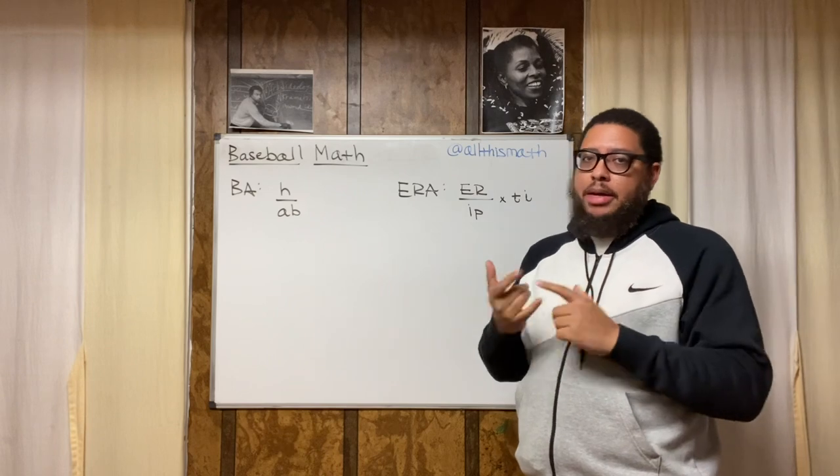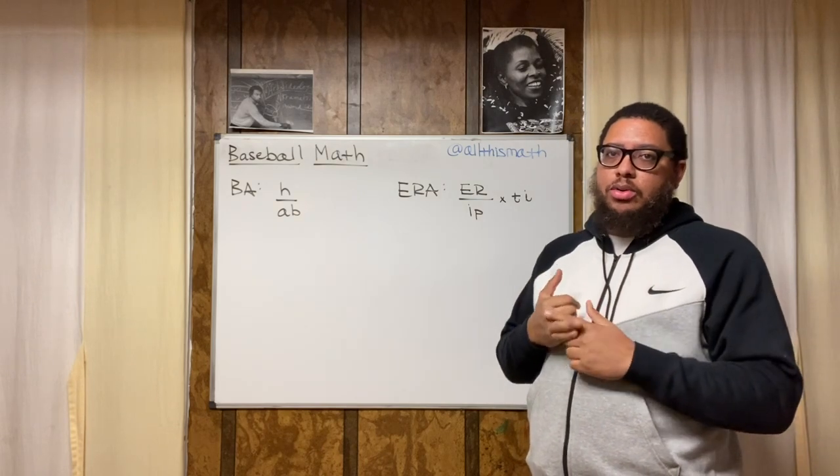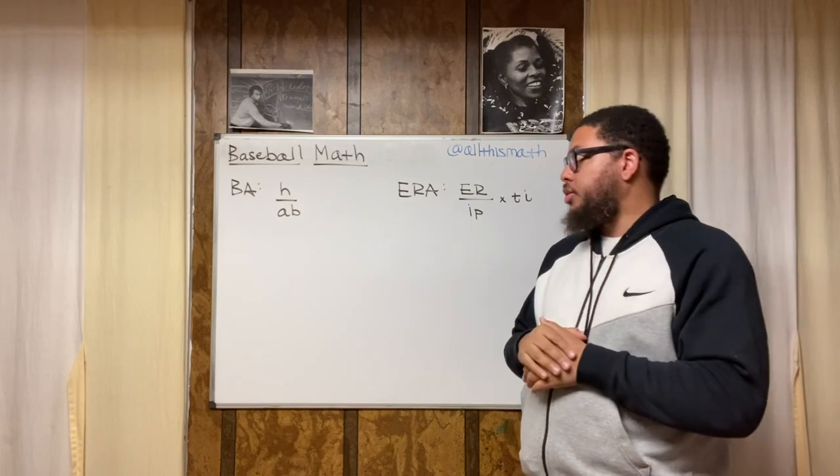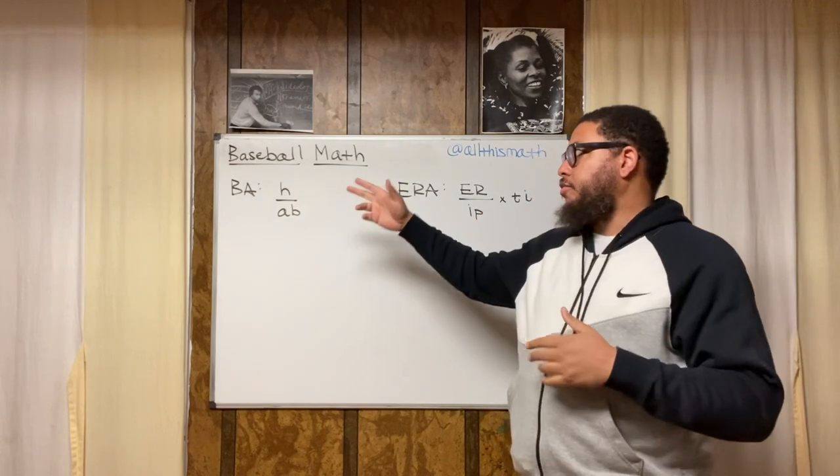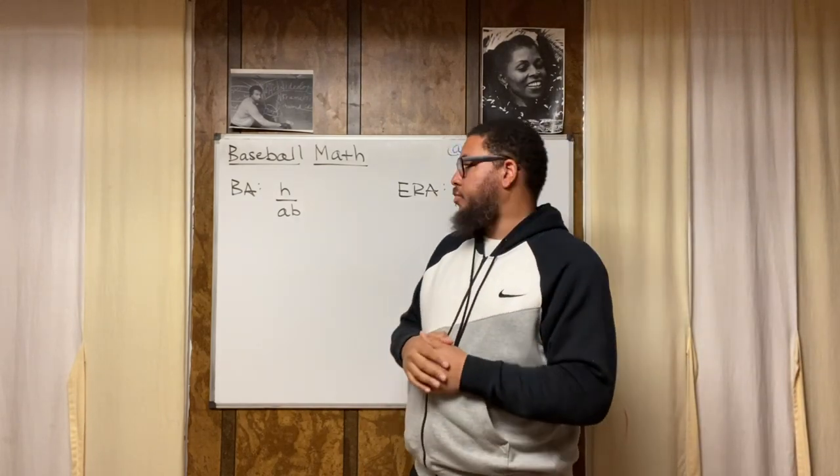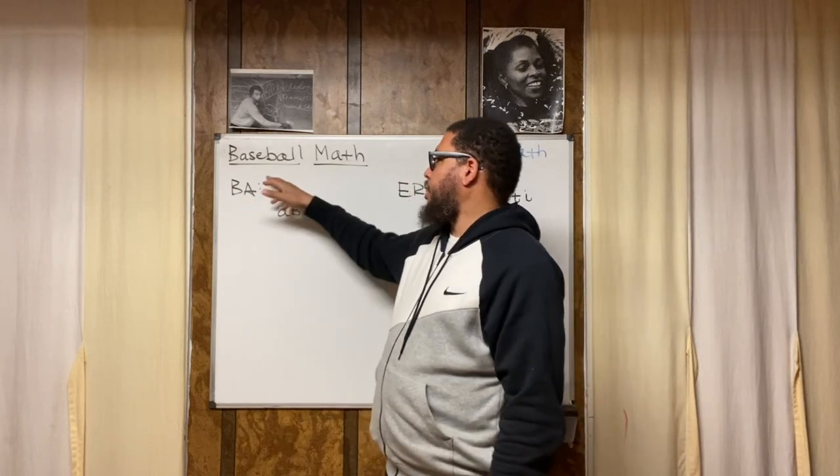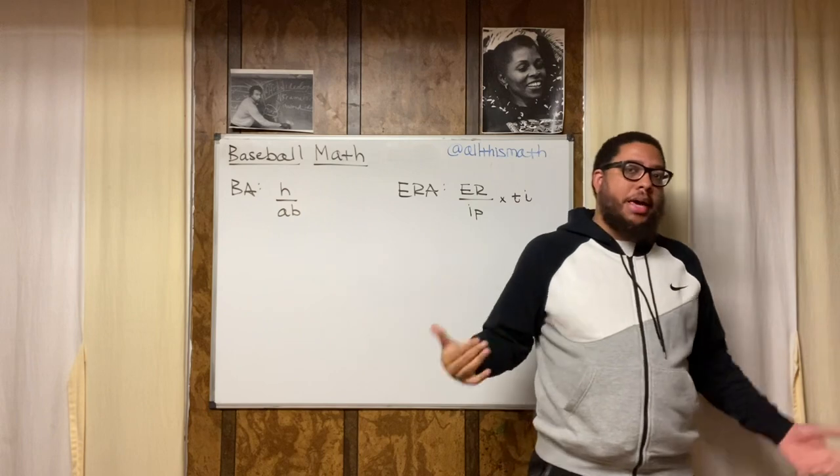We're going to talk about batting average, how to calculate batting average, and also ERA, or earned run average. So batting average, and I got a lot of abbreviations up here, a lot of acronyms that you may or may not be already familiar with. Batting average is going to be equal to the number of hits you have divided by your number of at-bats.